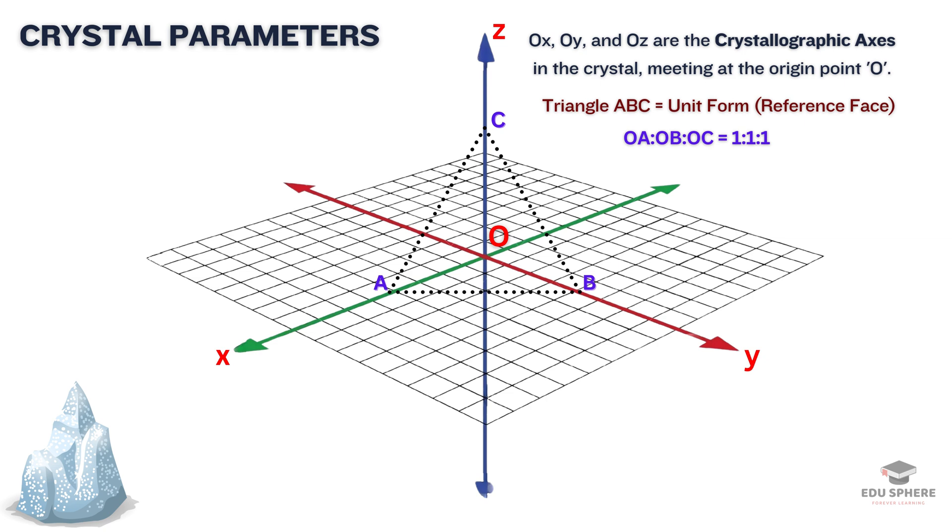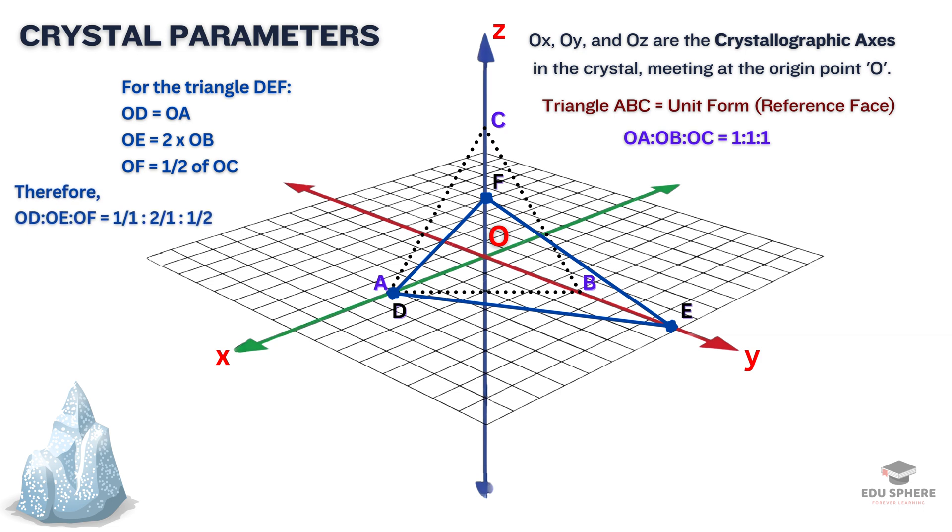Now let's look at another face of the crystal, DEF. It's a different face from ABC. It crosses the x-axis at the same spot as ABC, but it goes twice as far on the y-axis and only half as far on the z-axis. We can use ratios to describe these relationships: that is, 1:1 for the x-axis, 2:1 for the y-axis, and 1:2 for the z-axis. These ratios are what we call the parameters of face DEF.